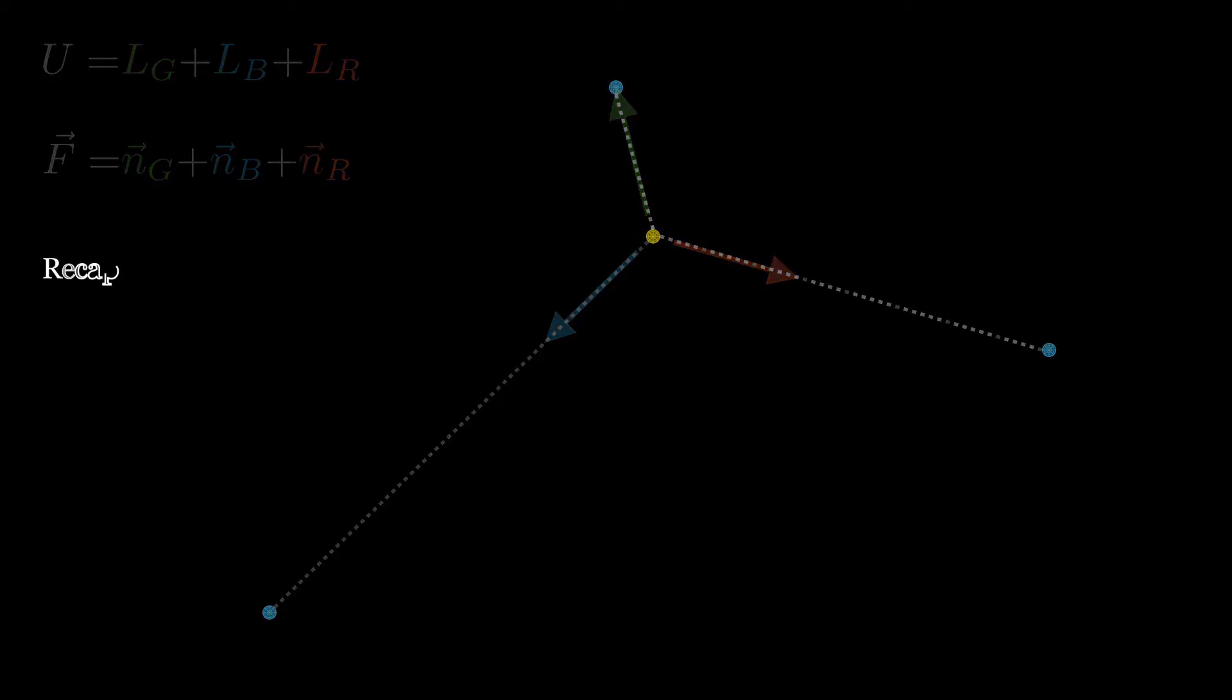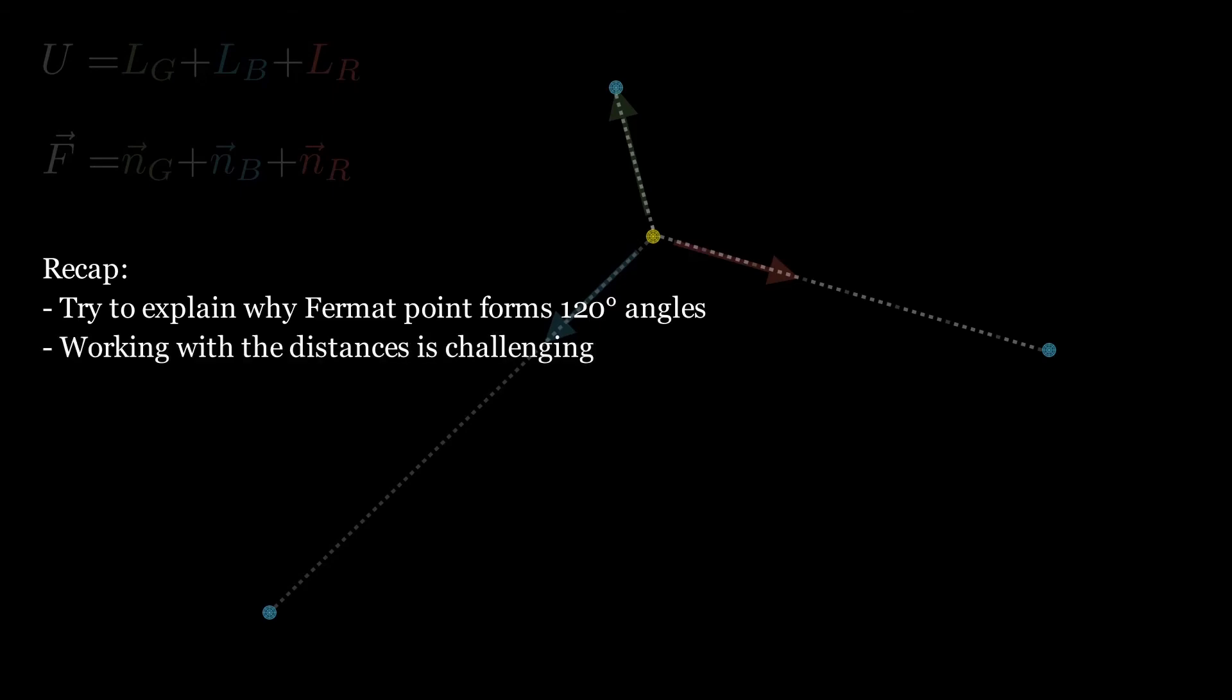Let's retrace our steps one more time. The Fermat point, which minimizes the total distance to the other vertices, mysteriously keeps 120 degree angles. Working with the distances directly to explain that effect is challenging.